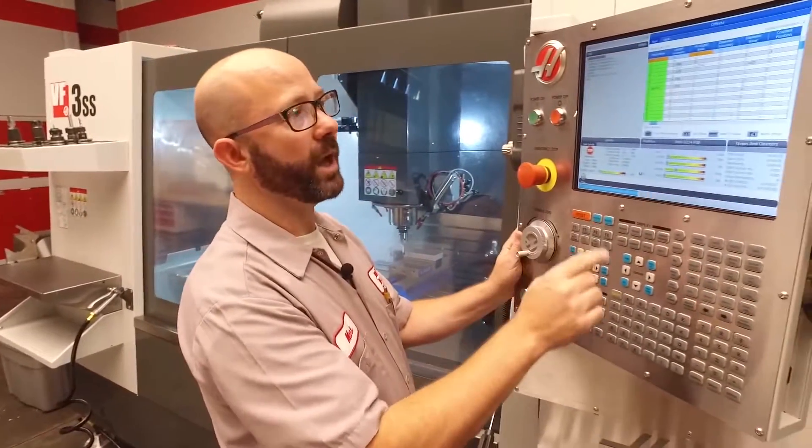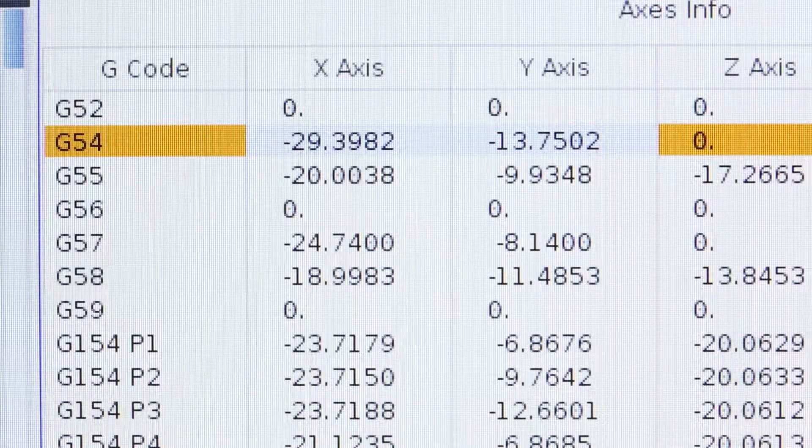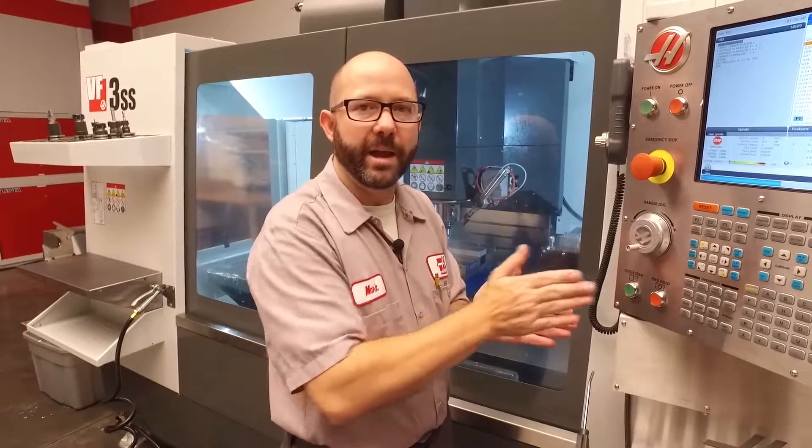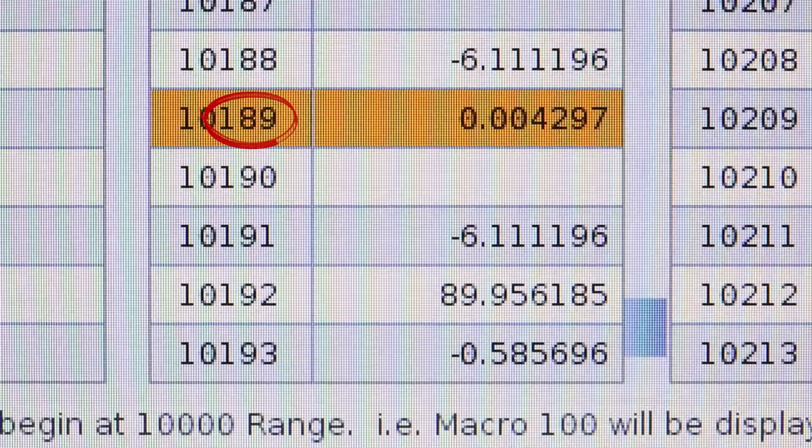Here's the cool part. Here's the thing I'm excited about. It wrote to my work offset, my G54 X Y value, but it wrote the angle along my X axis, that front face, to macro variable 189.